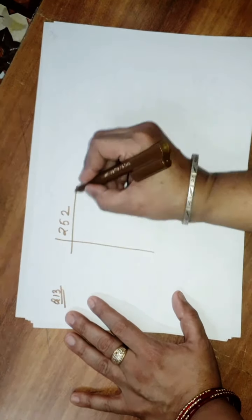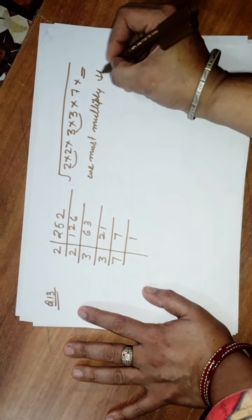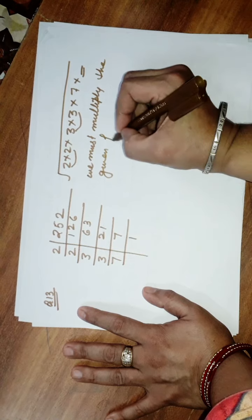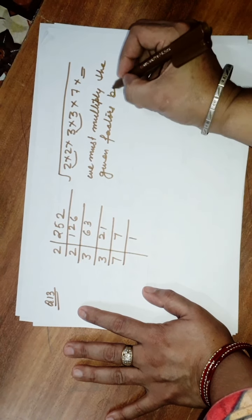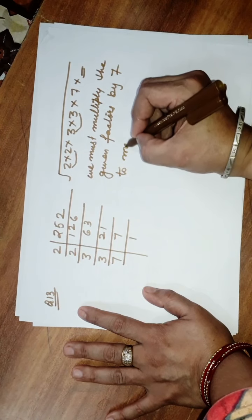We have to do the small number first. Look — this number is in the form of a square, but this number is not in the form of a square. So by which smallest number should we multiply 252 to make it a perfect square? The answer is exactly 7. We must multiply the given number by 7 to make it a perfect square.